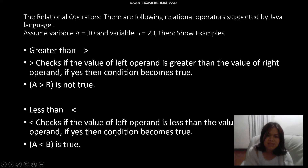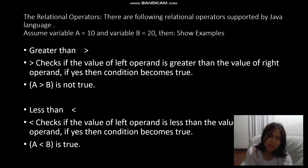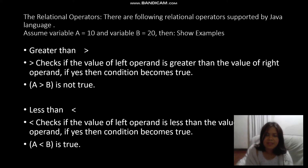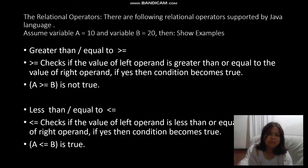Less-than checks if the value of the left operand is less than the value of the right operand. If yes, the condition becomes true. Here, a is 10 and b is 20, so 10 less than 20 is true.